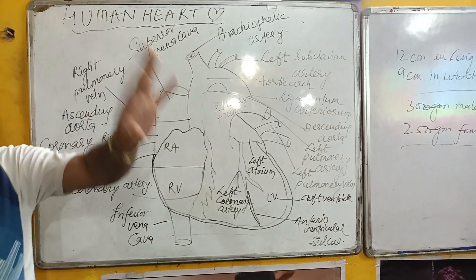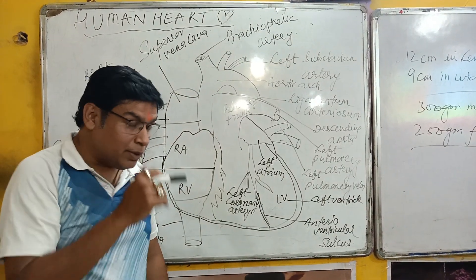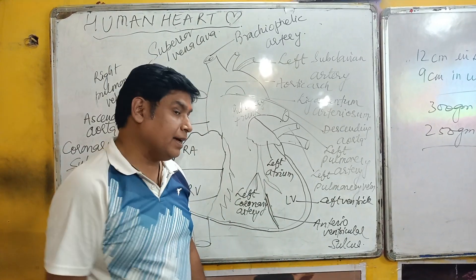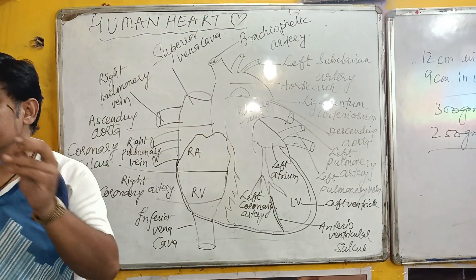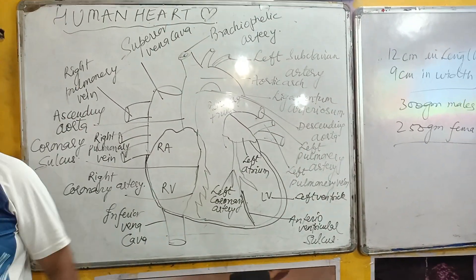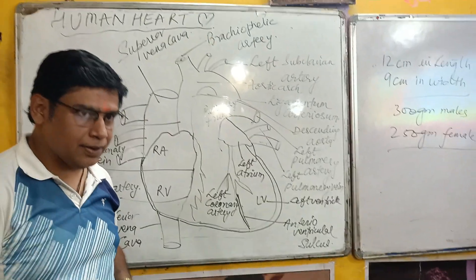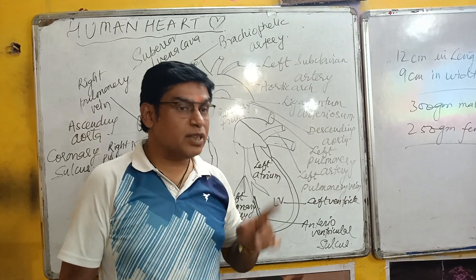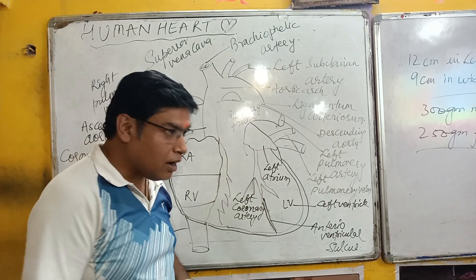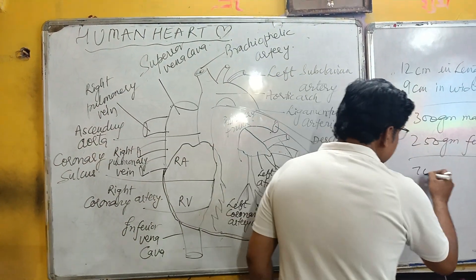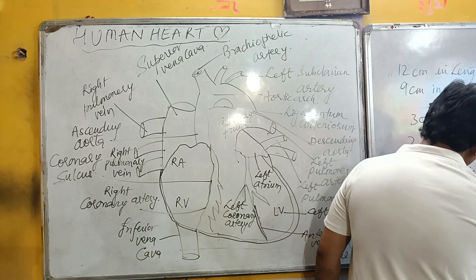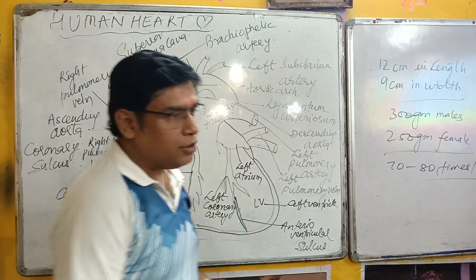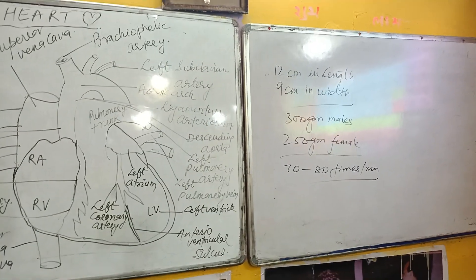The heart is a remarkable organ because it continuously pumps blood. The average adult human heart beats 70 to 80 times per minute.